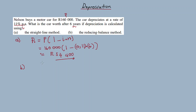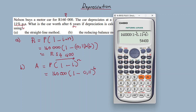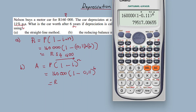For B, the reducing balance method: A = P(1 − i)^n. So A = 160,000 × (1 − 0.11)^6, which equals 79,000.517 — approximately 79,000 rand. So for the same six-year period, using the straight line method the car loses value quickly, but when calculated using the reducing balance method, it loses value more slowly.